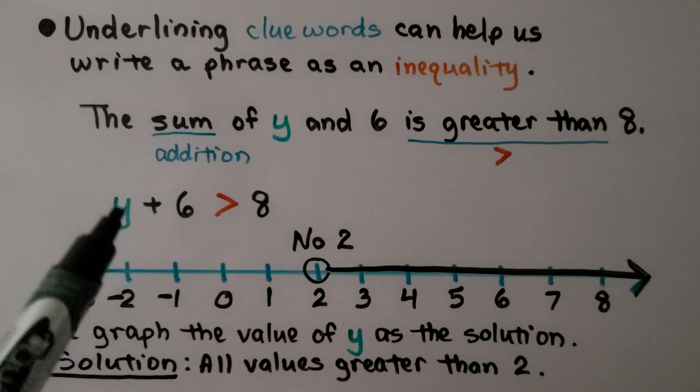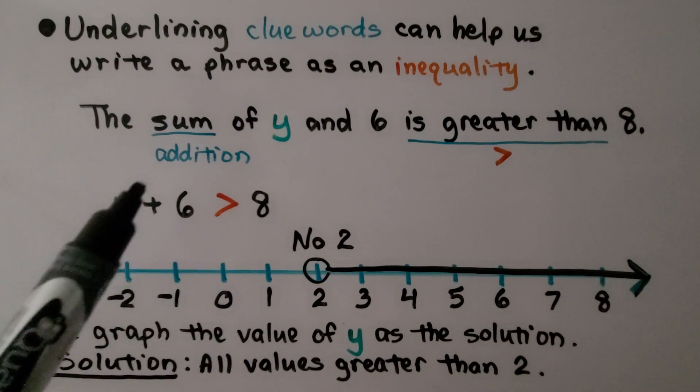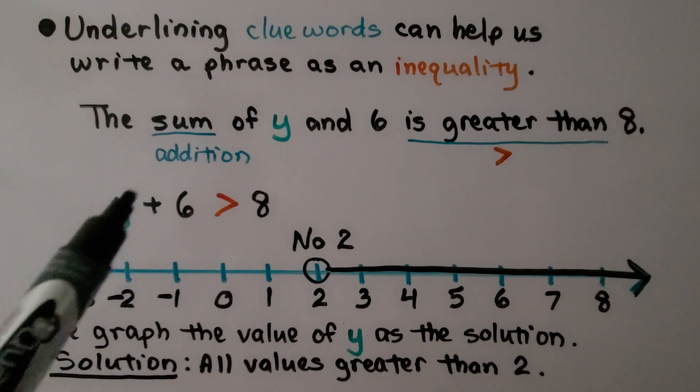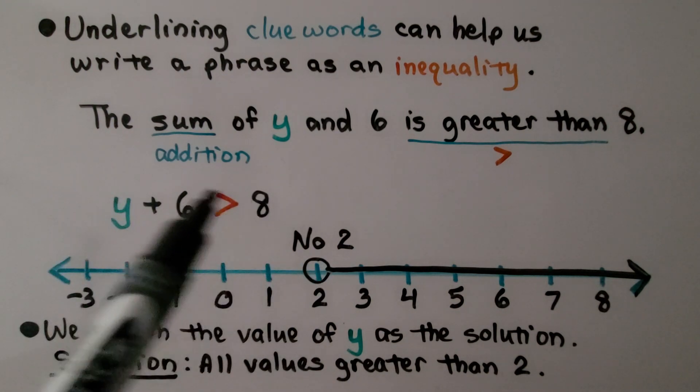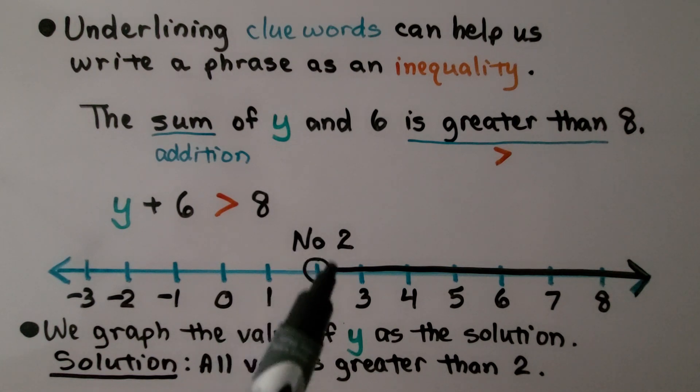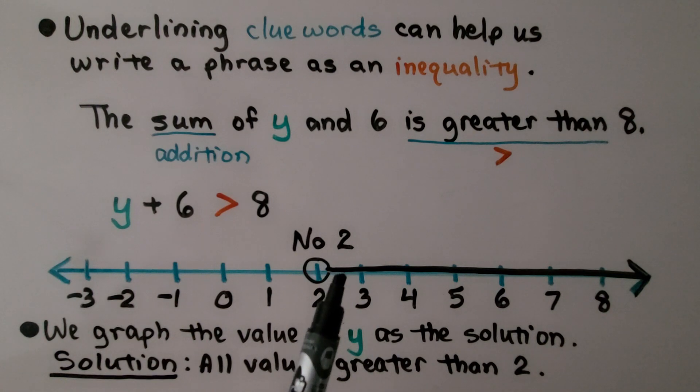So in order for this side to be greater than this side, this side needs to have a number greater than eight. That means y must not be two because then it would be equal. So it's not going to include two, but any value greater than two will be a solution. All the values greater than two are a solution. Even two and five tenths. That would be a solution. Even two and one hundredth would be a solution because that would be greater than two by one hundredth more.